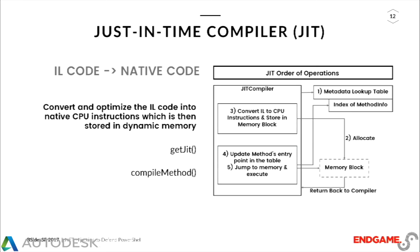What does the just-in-time compiler do? When it actually gets a function — which we call a method in C# — it will look up the method in the data table, create a memory block, convert that IL code into normal CPU instructions, save it in that memory block, update where that memory block is in the method table, execute that code, and return back to the compiler.